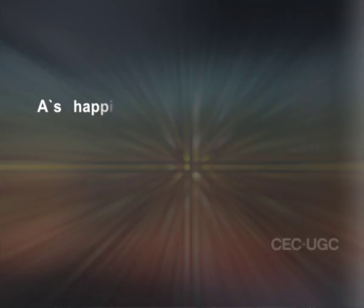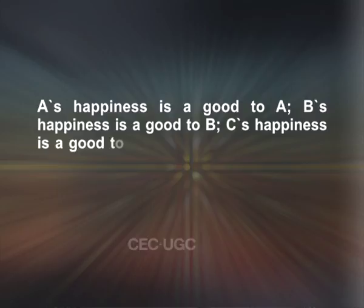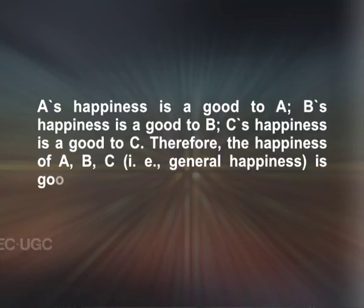On the analogy that an object is visible because people actually see it, and a sound is audible because people hear it, Mill concludes that a thing is desirable because people do actually desire it. According to Mill, each person's happiness is a good to that person, and the general happiness therefore is a good to the aggregate of all persons. A's happiness is good to A, B's happiness is good to B, C's happiness is good to C — therefore, the happiness of A, B, and C, that is general happiness, is good to A plus B plus C, that is the aggregate of all persons.